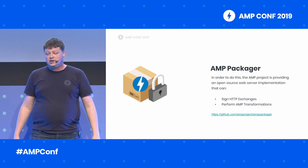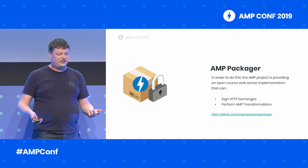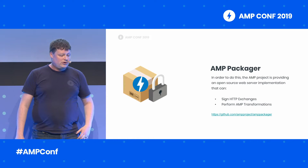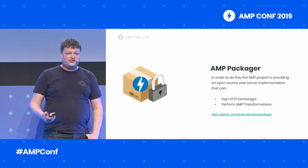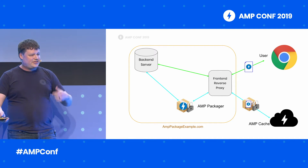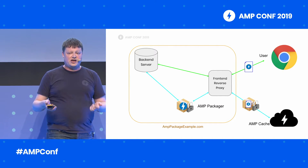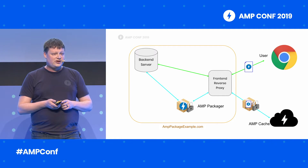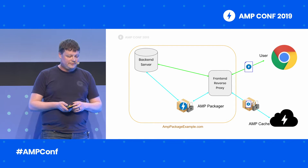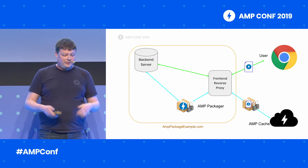In order to support signed exchanges with AMP, we have open-sourced a web server called the AMP packager. This implementation can perform all the necessary transformation and signing. The AMP packager is implemented in Go as a binary — you can run it on your own infrastructure today, and it can sign and package AMP documents. It's designed to sit behind your own front-end reverse proxy. You would configure your server to send AMP cache requests to the packager, while user requests operate the same way. The AMP packager, in turn, fetches the original AMP documents from your own back-end, then optimizes and signs them.